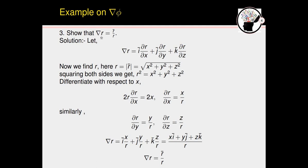Example 2: Show that grad(r) = r⃗/r. Here r is a scalar, found from the magnitude of vector r⃗, defined as r = √(x² + y² + z²), or equivalently r² = x² + y² + z². We use the gradient definition: grad(r) = i(∂r/∂x) + j(∂r/∂y) + k(∂r/∂z). To find ∂r/∂x, we differentiate r² = x² + y² + z² with respect to x.